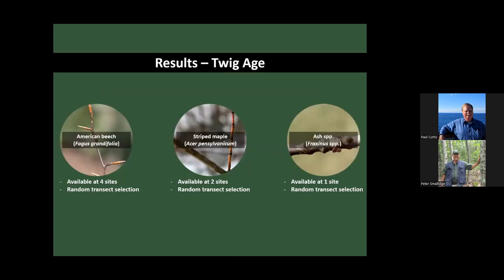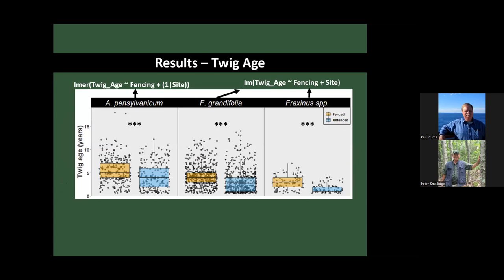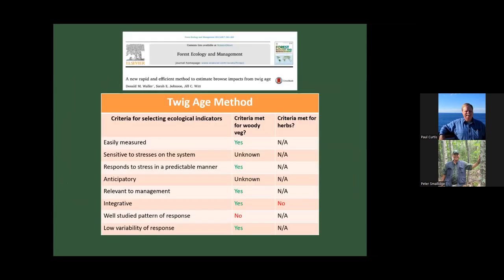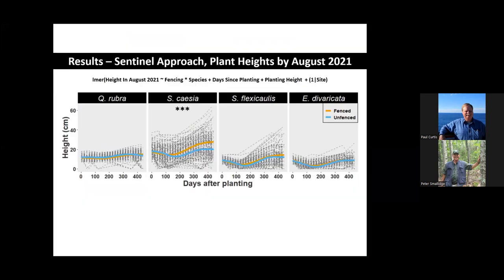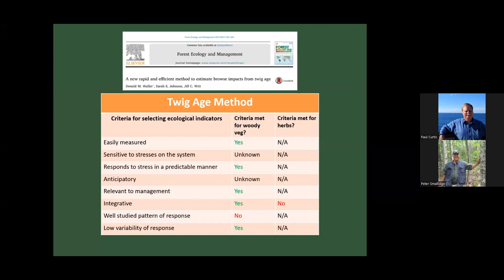For the Twig Age method, American beech was available at four of the five fenced sites, striped maple at two sites, and ash at one site. The Twig Age method did a very good job of predicting excessive deer browsing — we saw significant differences inside and outside the fence based on twig ages for all three species at the sites where they were available. When we look at the Twig Age method against ecological indicator criteria, it performed relatively well across the board for woody vegetation. It's not designed for herbs, only for woody seedlings, but it performed relatively well.